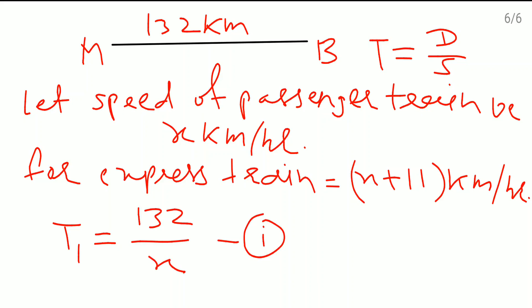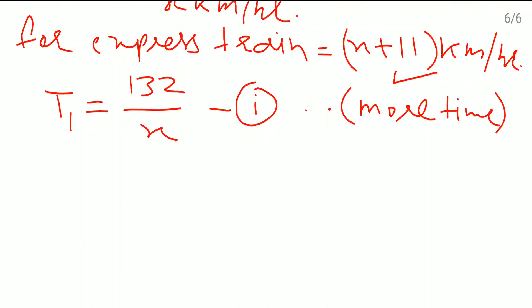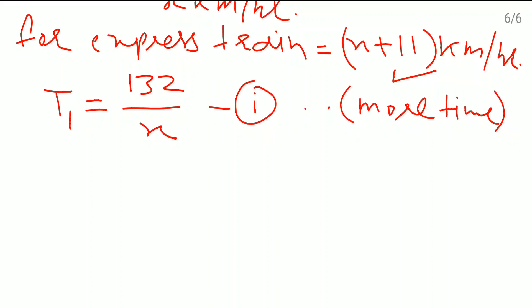Now passenger train is a little slow. The speed of the express train is more, so passenger train will require more time. I'm writing here 'more time' for our convenience, because most of the time you people do mistakes while doing subtraction.